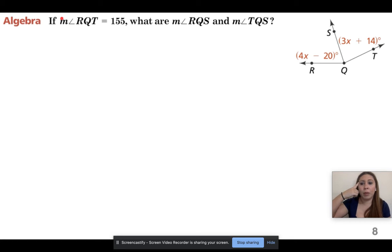So when you see this little m right here, that's saying in your brain measure. So if measure of angle RQT equals 155, so this whole angle right here is 155. I want to know what this angle is and what this angle is. So note, is it asking me to find x and that's it? No, bad student.